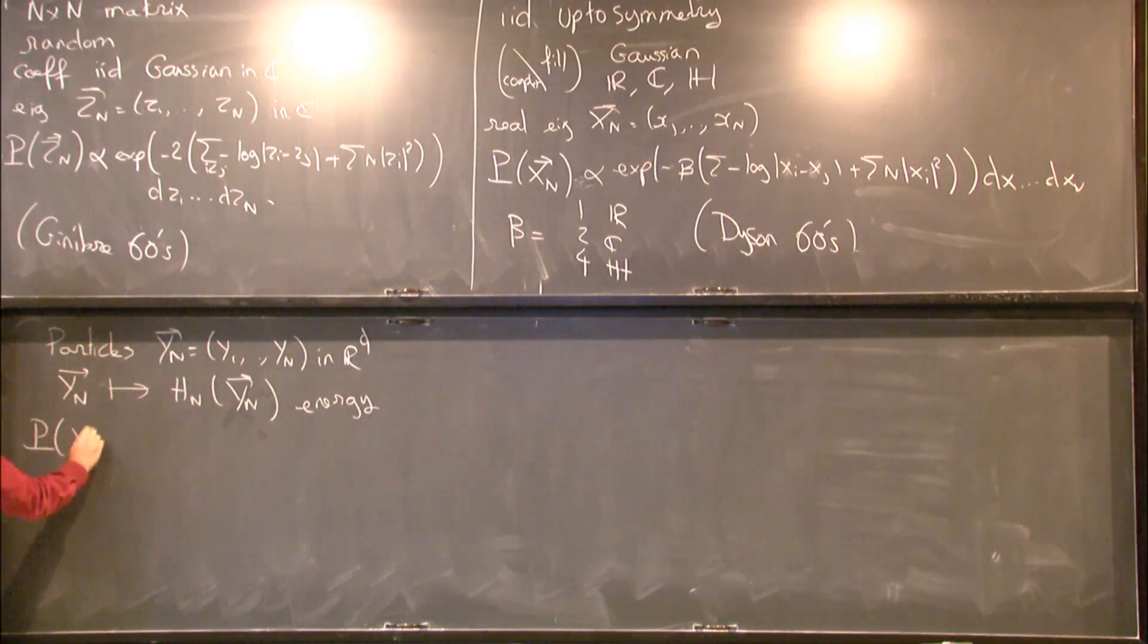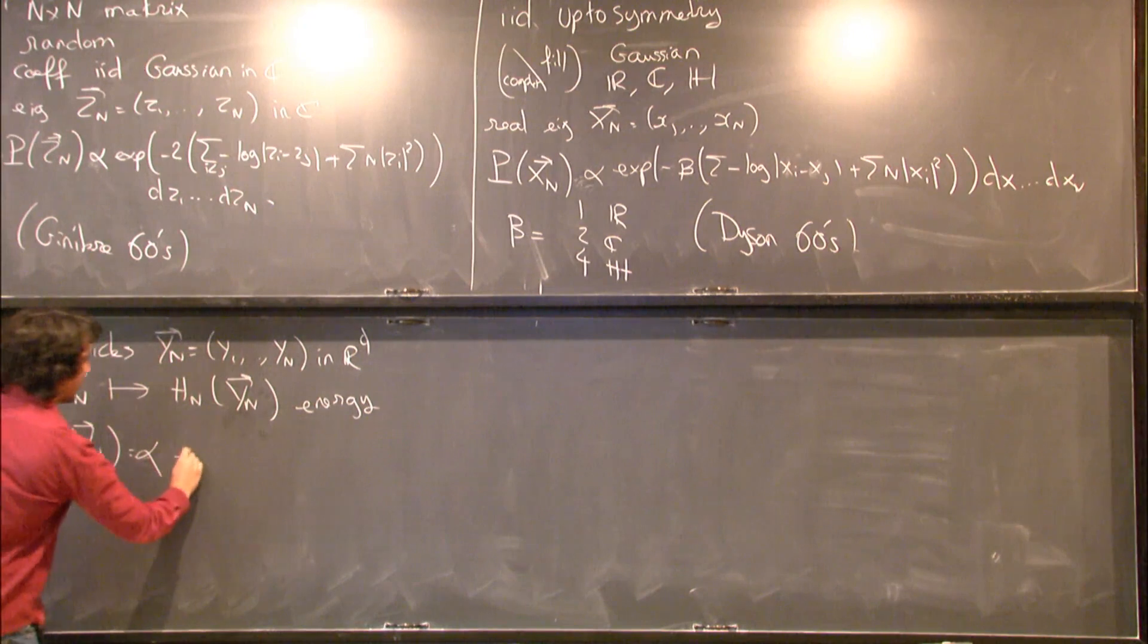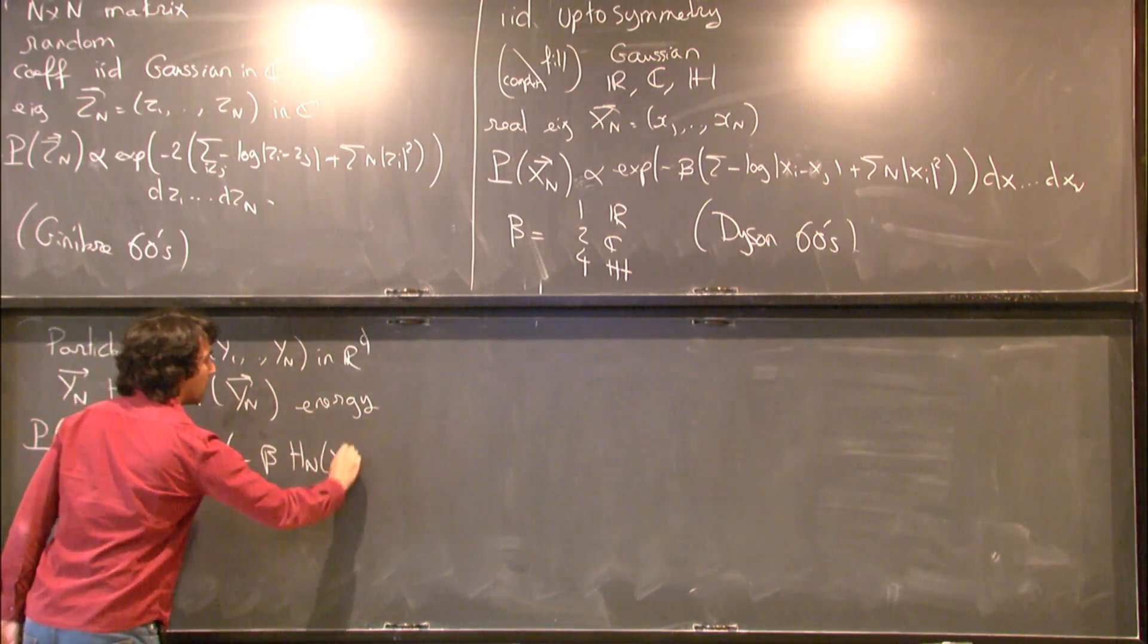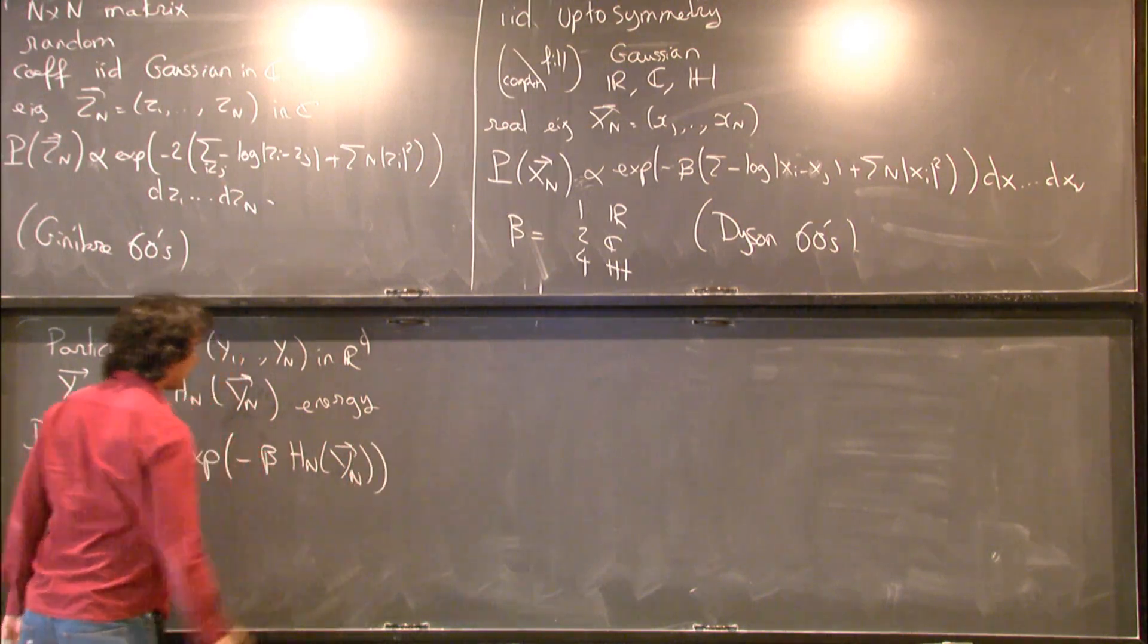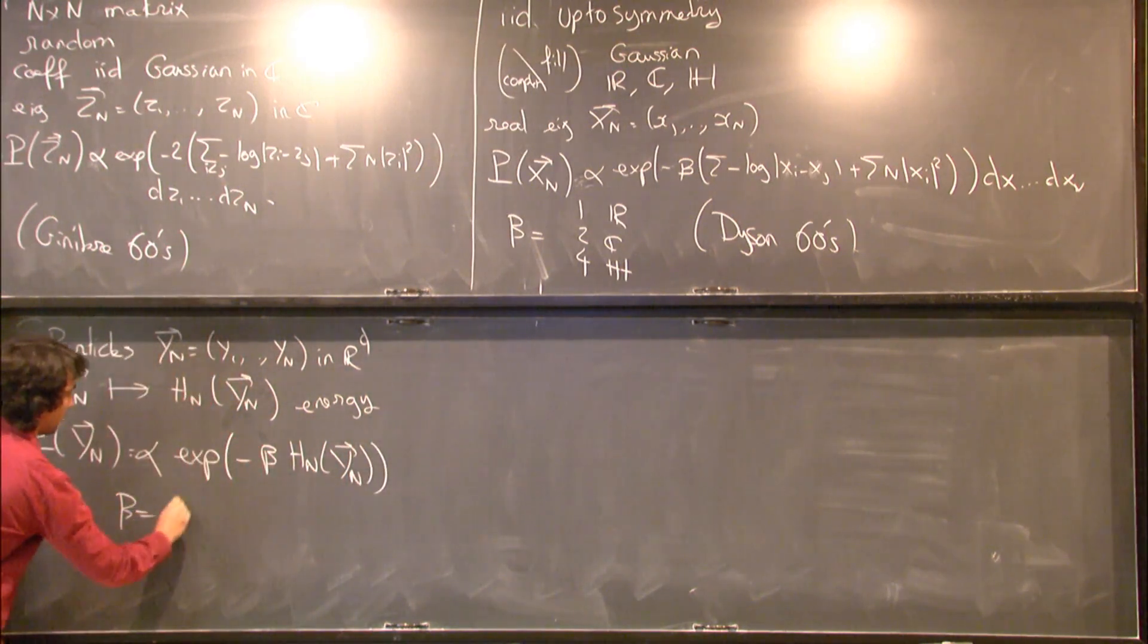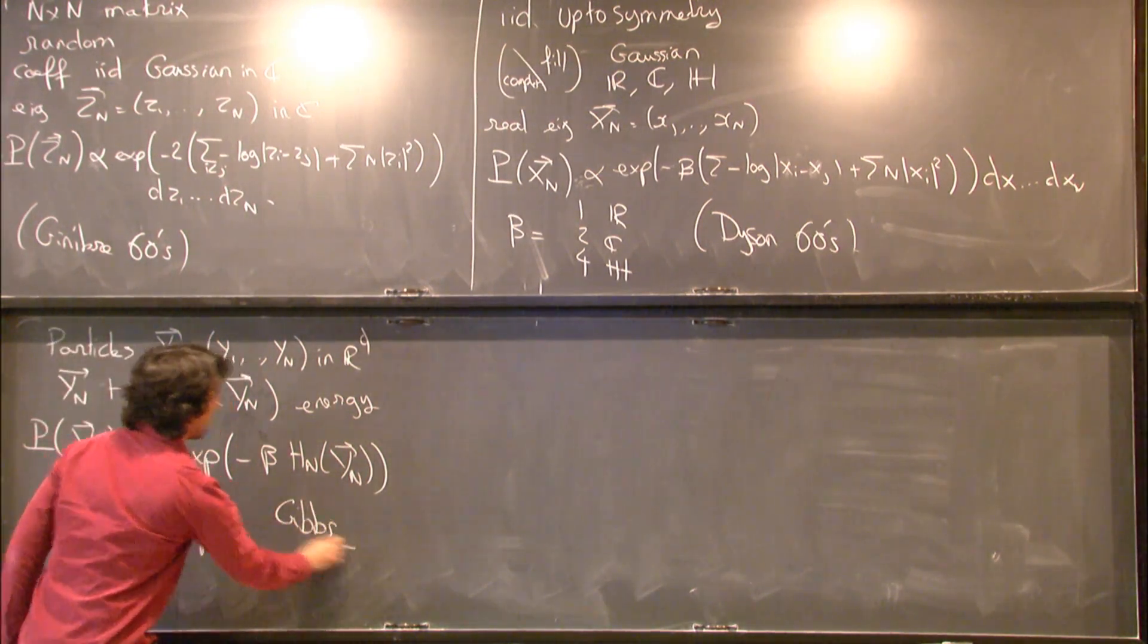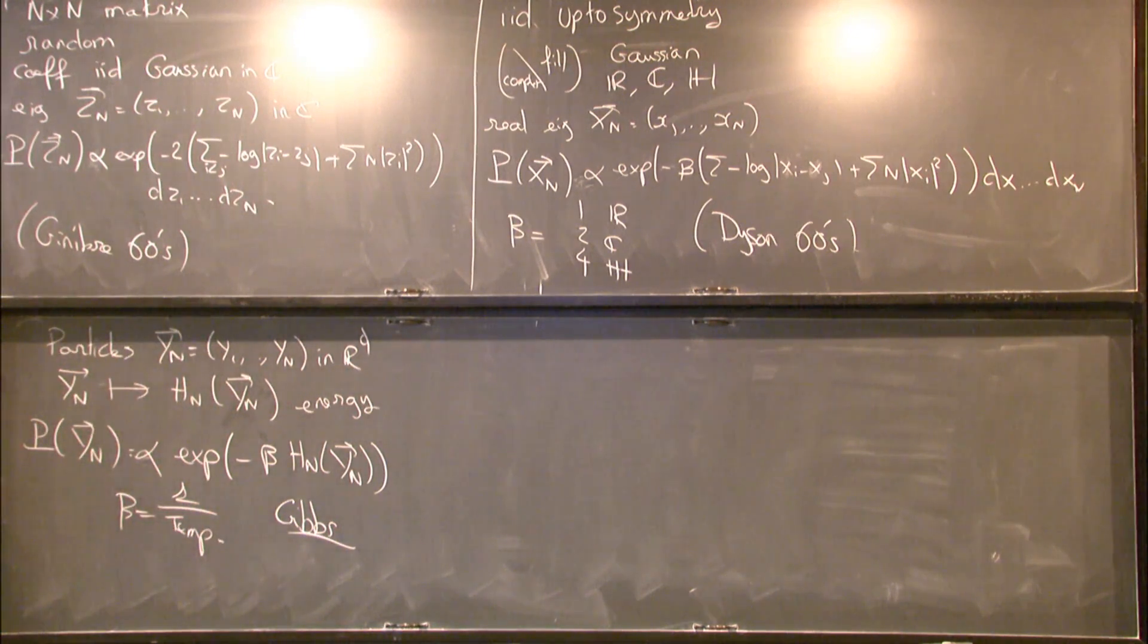Then you could ask, well, the point of view of statistical physics is to treat the state of the system as being random. And the probability of observing a certain state is proportional to the Boltzmann factor, which is this. And beta is one over the physical temperature. That's called the Gibbs measure.